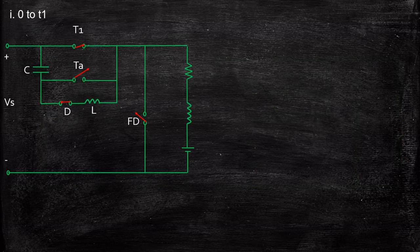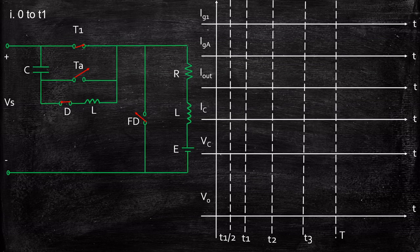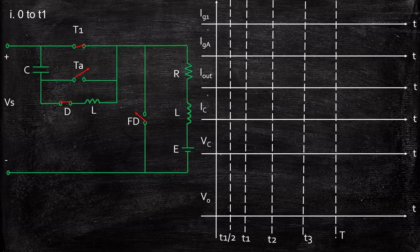Now let's continue our analysis. We are going to divide this into various time ranges: 0 to T1, T1 to T2, T2 to T3, and T3 to T, where T is the total time period divided into smaller pieces for easier understanding. The waveforms we will consider are: IG1 — gate pulse to thyristor T1, IGA — gate pulse to thyristor TA, Iout — output current, IC — current through the capacitor, VC — voltage across the capacitor, and Vout — output voltage.